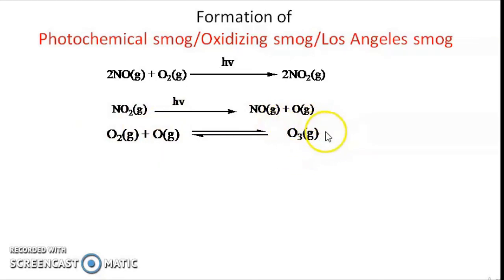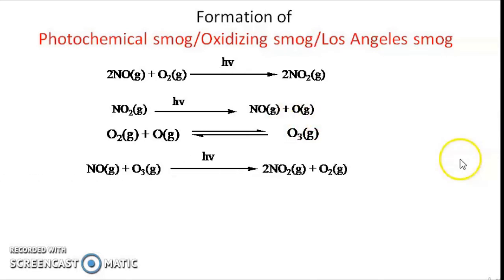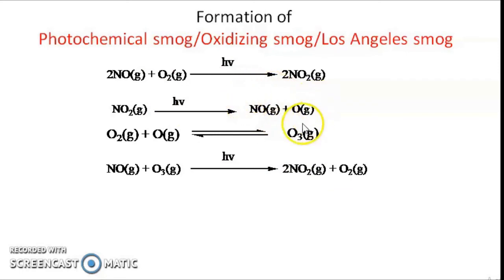This ozone near the Earth's surface is toxic and causes respiratory diseases. The ozone reacts with nitric oxide to form NO2 and oxygen, regenerating NO2. NO2 again decomposes to form NO and an oxygen free radical, which combines with molecular oxygen to form more ozone — so this continues like a chain reaction, producing ozone and nitrogen dioxide. The nitrogen dioxide gives the brown hazy appearance when photochemical smog is observed.